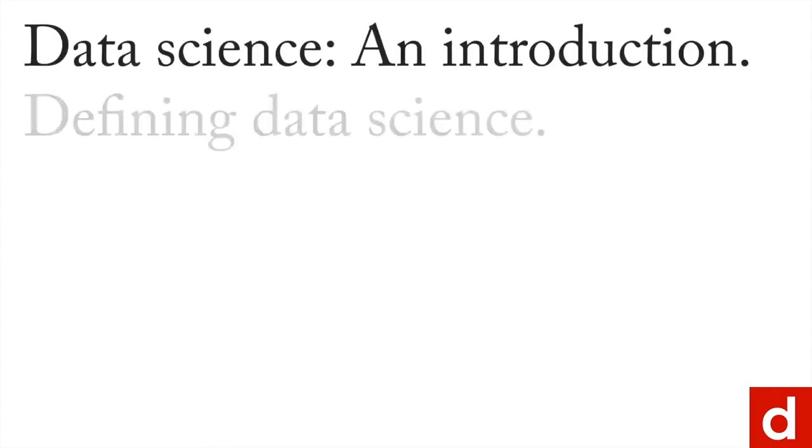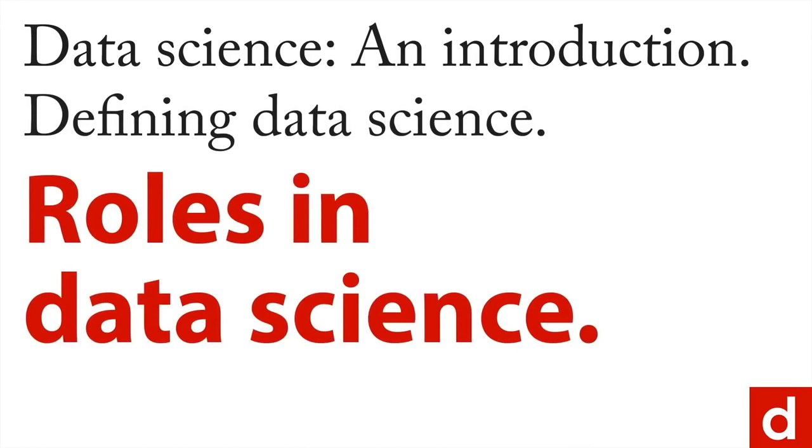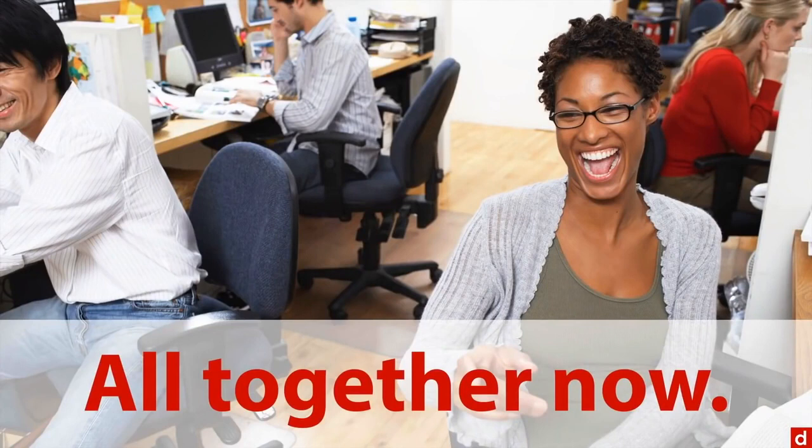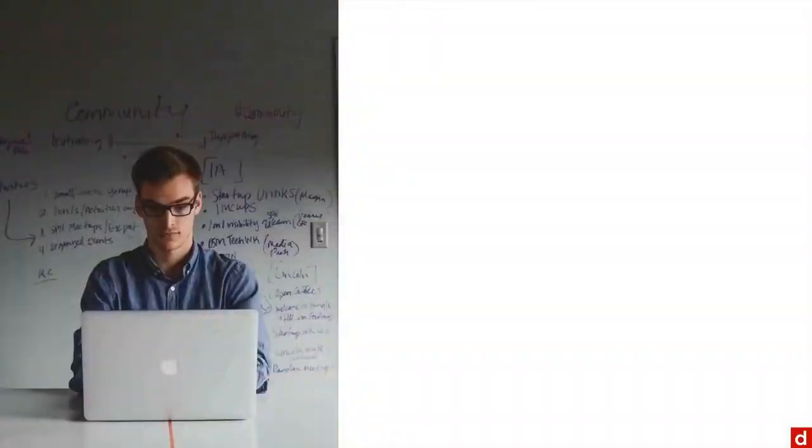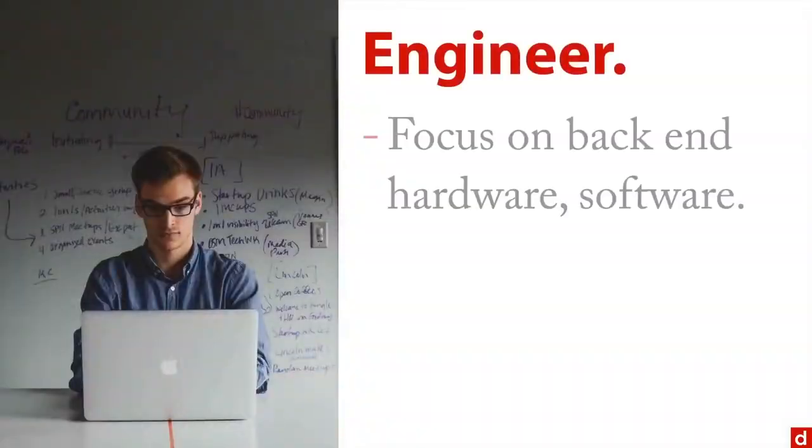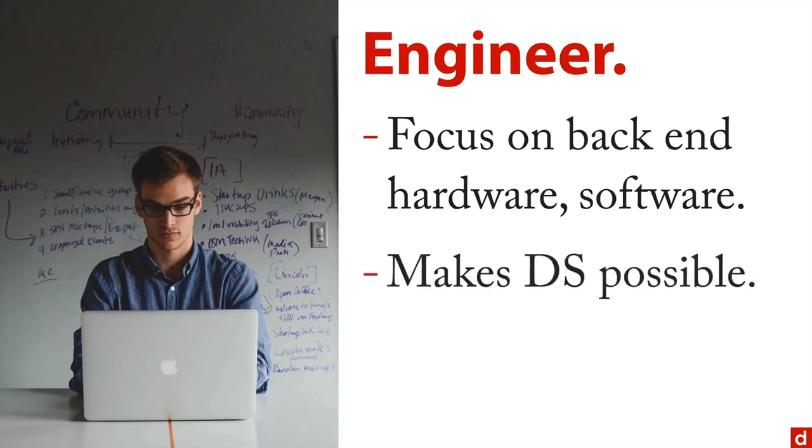We'll continue our definition of data science by looking at the roles that are involved, the way that different people can contribute to it. That's because it tends to be a collaborative thing. Let's talk about some of the roles involved in data science and how they contribute to projects. First, let's take a look at engineers. These are people who focus on the back-end hardware, for instance the servers, and the software that runs them. This is what makes data science possible. It includes people like developers, software developers, or database administrators. And they provide the foundation for the rest of the work.